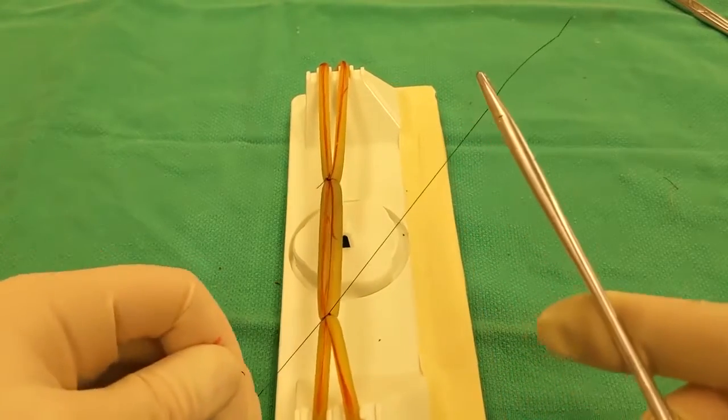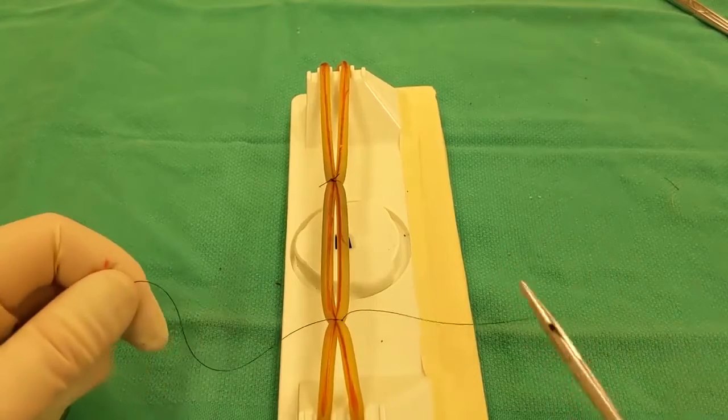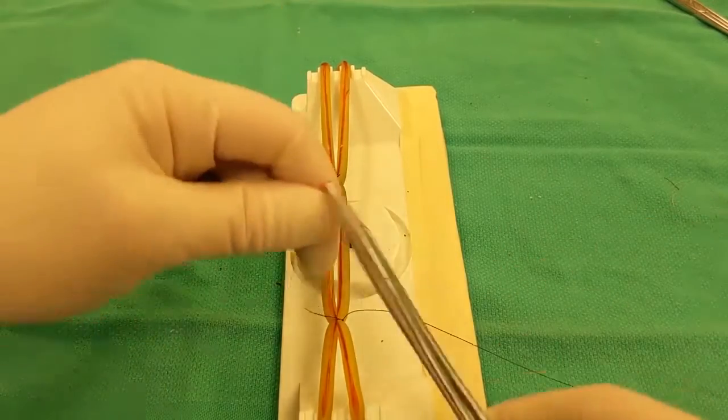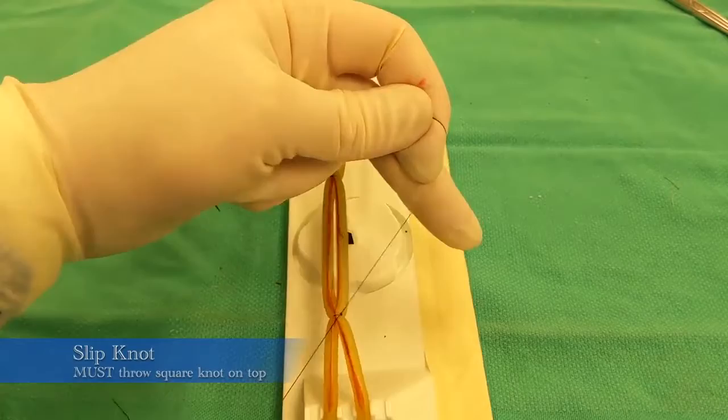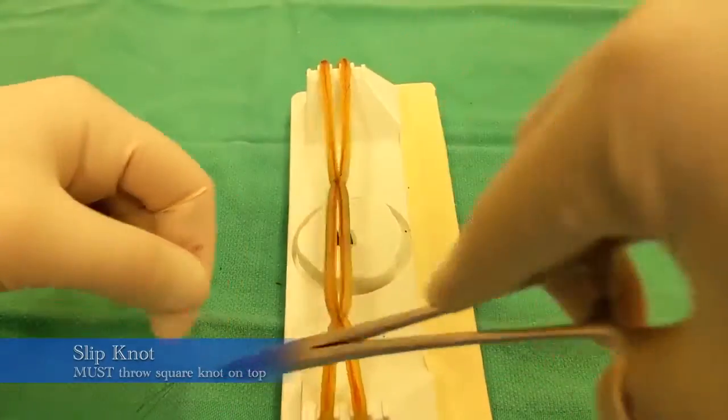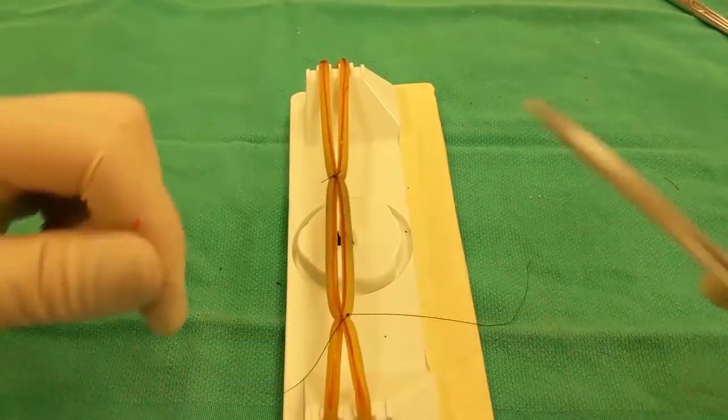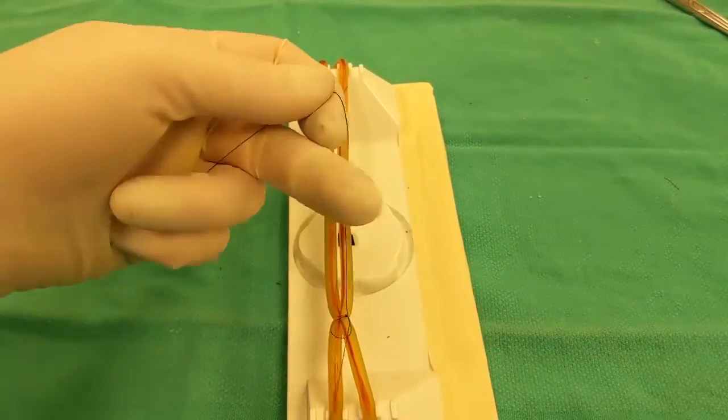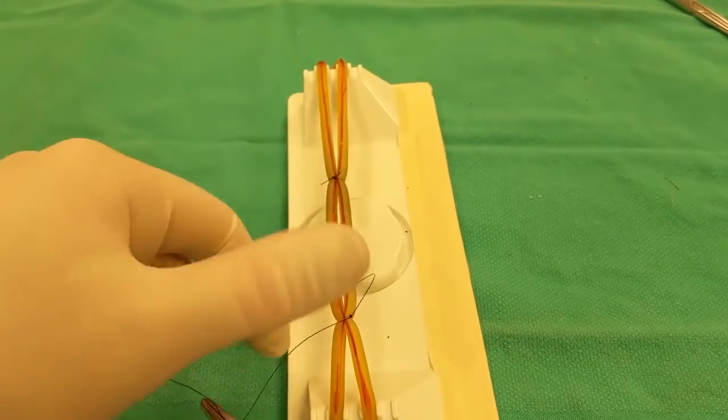So it's really important to recognize this, because half hitched or slipknots are not secure ligatures on their own. They must have a non-slipped square knot tied over it to lock the ligature in place. If additional slipknots are inadvertently placed instead of square knots, the ligation is prone to slippage and post-operative bleeding.